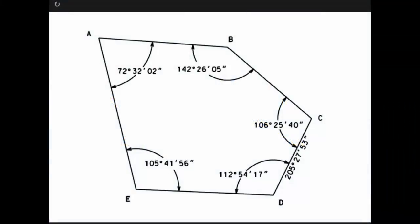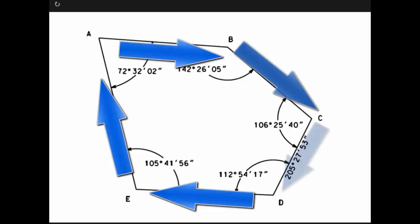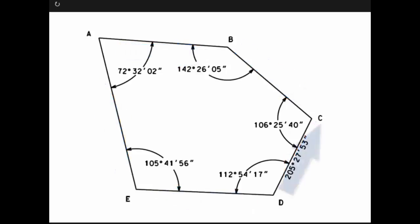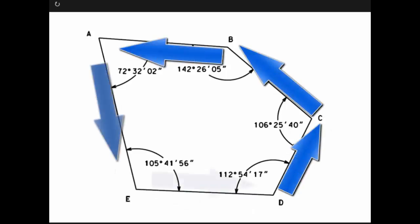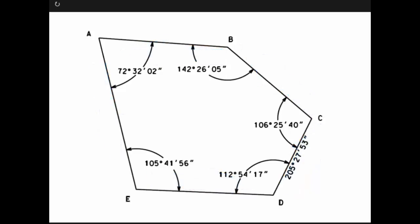In this video we will compute the azimuths of the sides of this closed traverse loop. We will do it first in the clockwise direction and then we will compute it again in the counterclockwise direction so you can see the similarities and differences in the process.